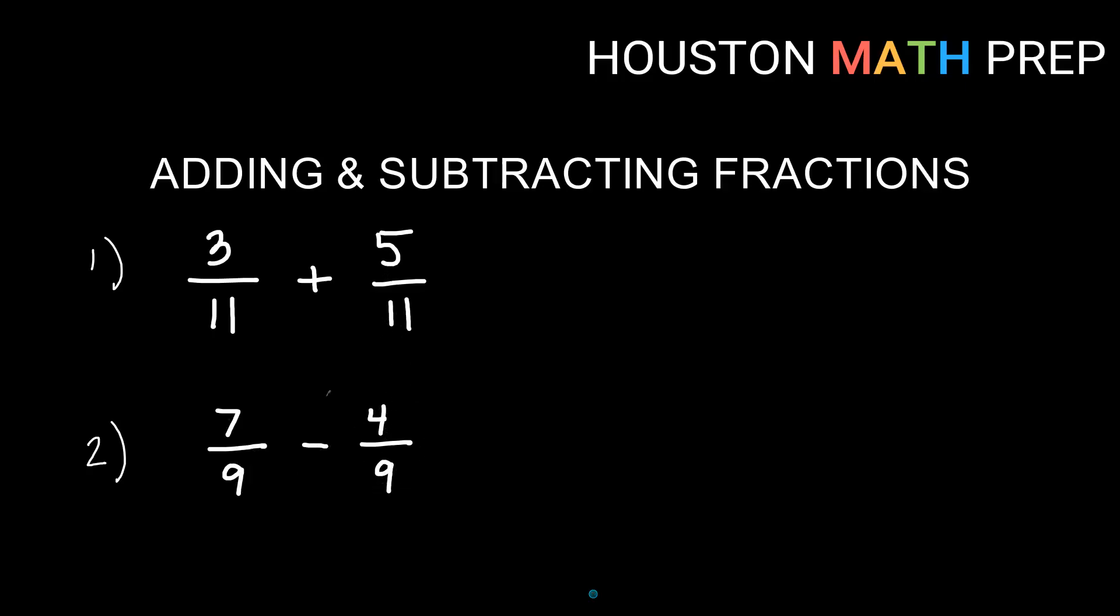So the thing you'll notice about these is that they have the same thing on the bottom when we're adding each problem, subtracting each problem. We call that a common denominator. They both have 11 on the bottom here, 9 on the bottom here. That's the best scenario. We always want to make sure we have that first when we're adding and subtracting fractions. So when you have that common denominator, you can simply just keep that denominator. Since everything's over 11, we will keep the 11. And you just do the math that's on top. The math on top is 3 plus 5 and 3 plus 5 is 8. So we get an answer of 8 over 11 for the first one.